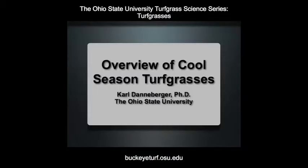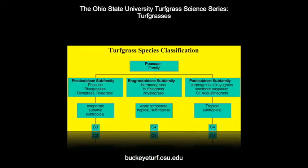Cool season turfgrasses are grouped in the Festucoideae subfamily of the family Poaceae. The major cool season turfgrasses are the fescues, bluegrasses, ryegrasses, and bentgrasses.